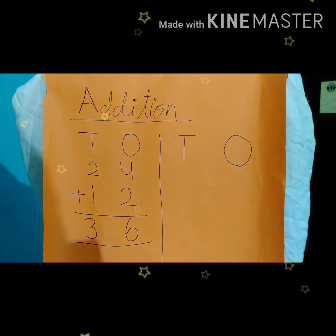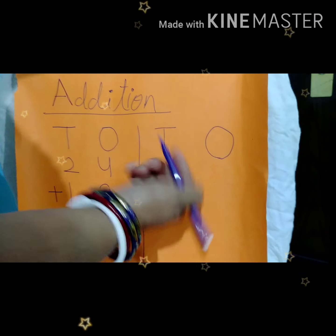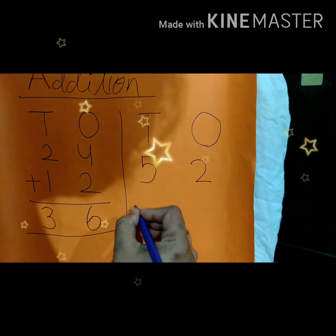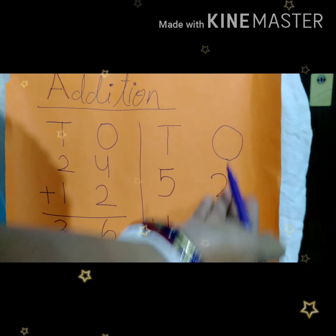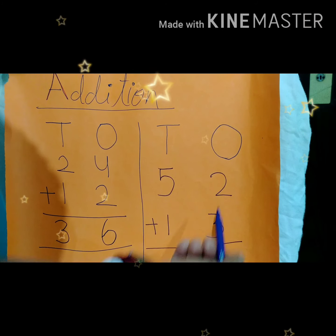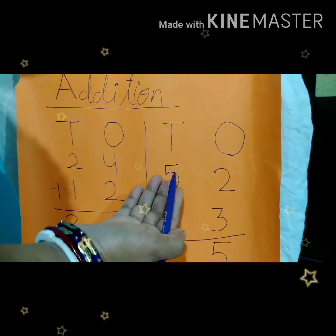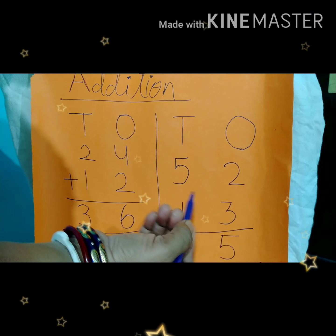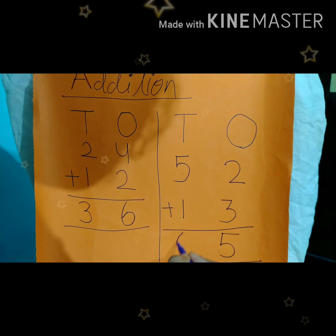So children, this is simple addition. Let's check out one more example. Here we have places 1's and 10's. Suppose we have here 52 plus 13. So how will we add? We will again start from 1's place. Here we have 2 plus 3. 2 plus 3 is equal to 5, so we will write 5 here. Now in 10's place you can see 5 plus 1. Simply you can add 5 plus 1. How much? 6. So we will write 6 here.